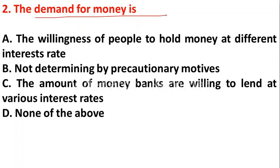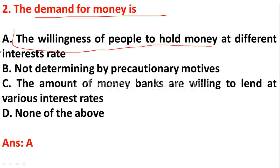The next question: the demand for money is — option A: the willingness of people to hold money at different interest rates, option B: not determined by precautionary motives, option C: the amount of money banks are willing to lend at various interest rates, option D: none of the above. The demand for money means the willingness of people to hold money at different interest rates — option A is correct.